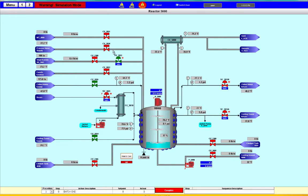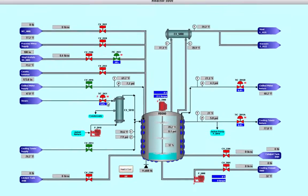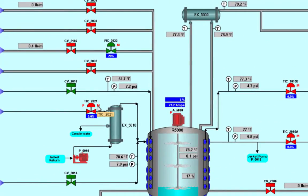If you look at some of the different valves, you'll see some of the different things that we do with our pieces of equipment, such as showing a manual status. If we hold onto it, it shows the loop number for that particular valve or the name, if you're not familiar with loops.